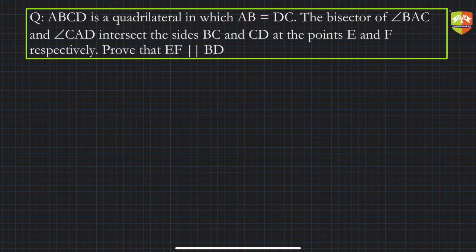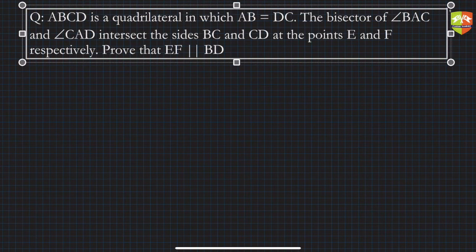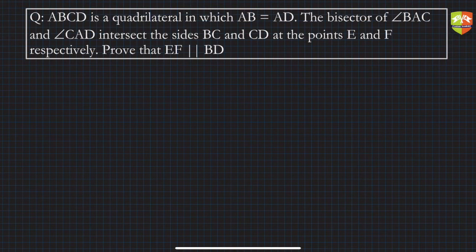Here is a question which says: ABCD is a quadrilateral in which the bisectors of angle BAC and angle CAD intersect the sides BC and CD at the points E and F respectively. Prove that EF is parallel to BD.